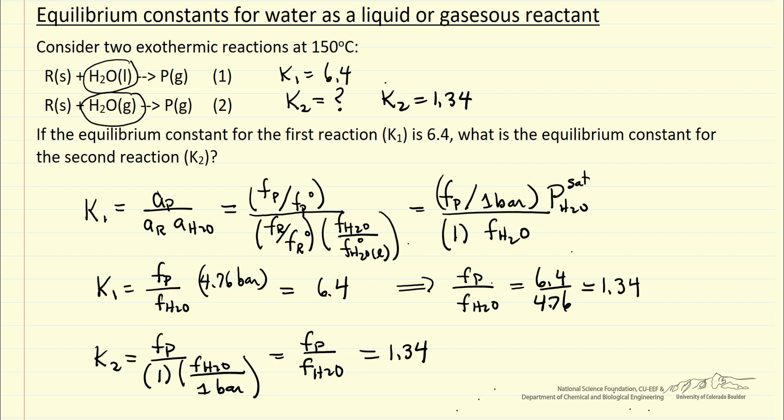Now of course this doesn't mean equilibrium's different, it just means when we used a different value for delta G calculation, we also have to use a different value for this fugacity reference. In this case, a gas at ideal gas conditions, one bar pressure.